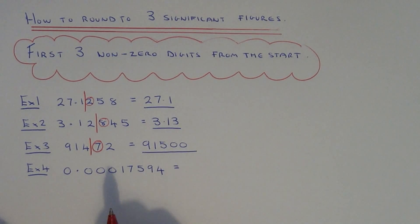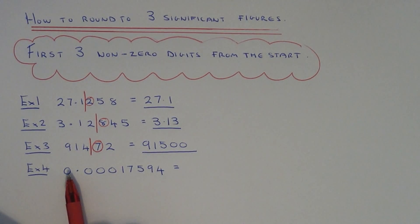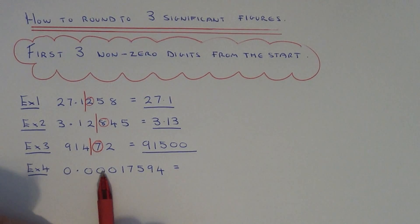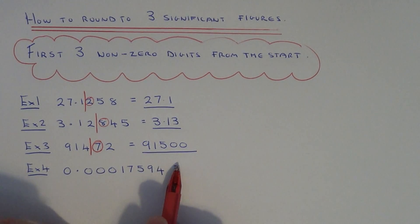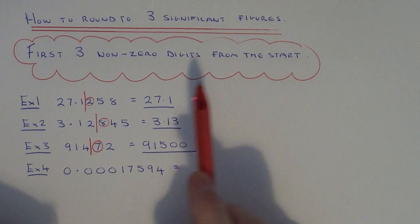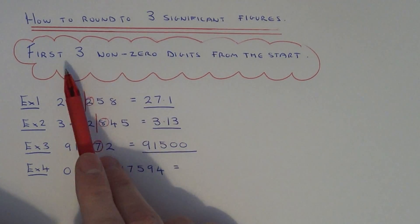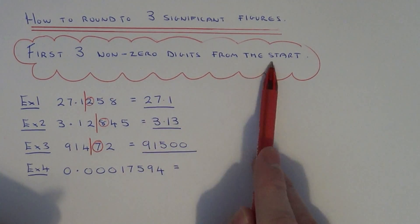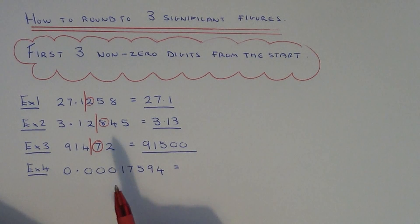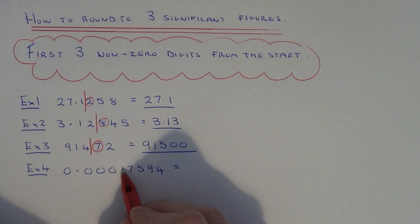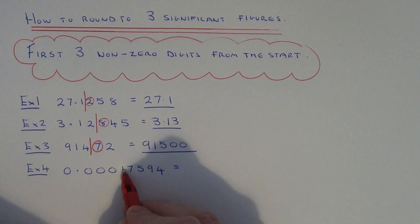Let's move on to our final example. This time we have a small number so we need to be careful — it's 0.00017594. This is where we have to remember our definition: it's the first three non-zero digits from the start, so we have to ignore all the zeros at the start and count three numbers from this point here.